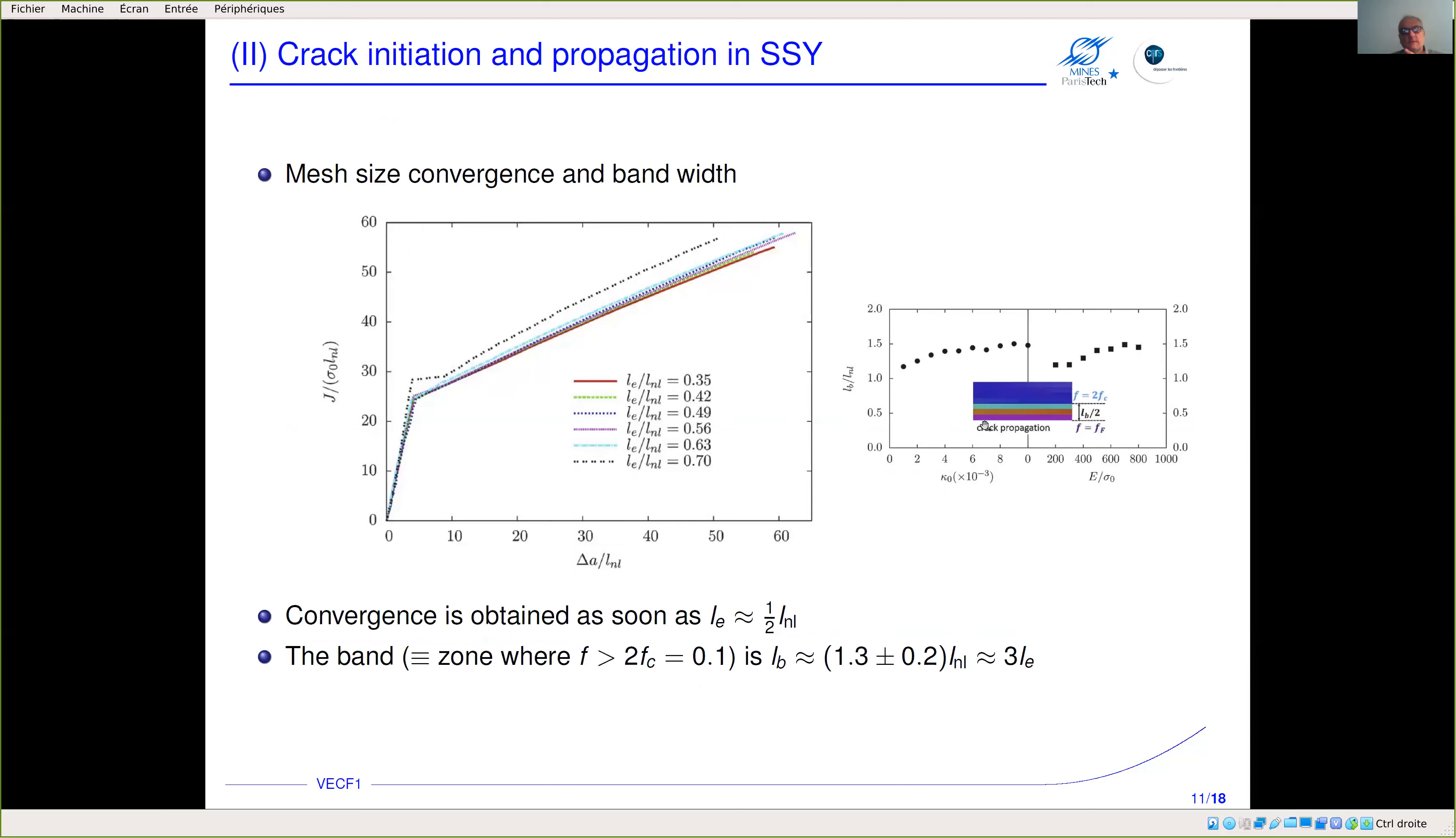We define in this particular case the localization band as the zone where the porosity is two times the critical porosity for coalescence in the GTN model, which in that case is 0.1. With this we find that the width of the localization band is about 1.3 to 1.5 times the non-local distance, which corresponds to three times the element height. If you know the bandwidth you want to describe, then you know the maximum element size you are allowed to use.